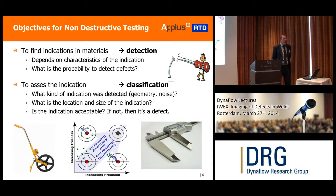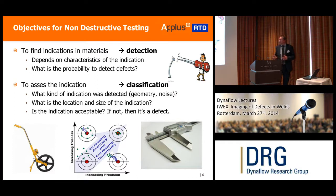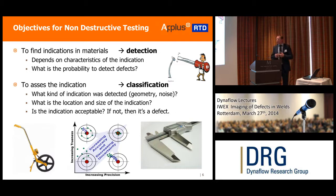The second question is: if we've detected something, we're not done. I can tell a pipeline owner I've found a crack, but then the question is how severe is it — what's the extent of the crack, is it harmful? That's a nice bridge with the previous presentation: if we cannot tell the extent or depth of the crack, we need to build in conservatism and assume it is harmful, and thereby we may repair a pipeline for the wrong reasons. So we need to know the location, the size of the defect, and the nature of the indication. If something is found and it's acceptable, we talk about an indication; if not acceptable, we talk about a defect.